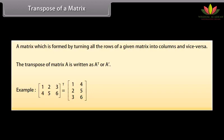Second row: 4, 5, 6. The transpose is matrix row-wise — first row: 1, 4; second row: 2, 5; third row: 3, 6.